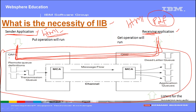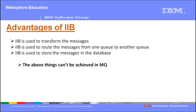This is where IIB comes into picture. On top of MQ, if we have installed a software called IIB, and if the IIB developer designs logic so that whatever message is received in queue manager two gets transformed from HTML format to PDF format, then the PDF format message can be processed by the receiving application. That is where message broker—IBM Integration Bus—comes into picture. The first advantage of IIB is that it is used to transform messages from one form to another.